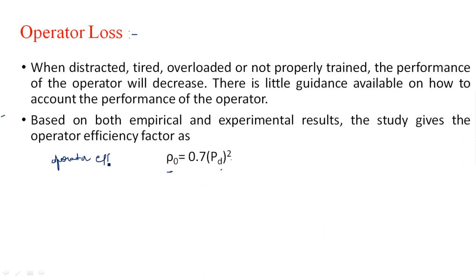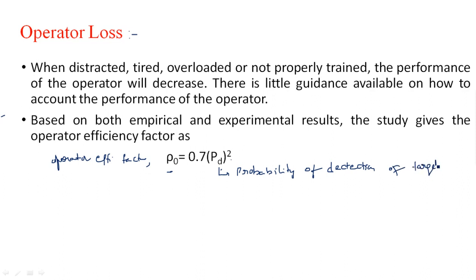The operator efficiency factor ρ₀ is given by: ρ₀ = 0.7 × Pd², where Pd is the probability of detection of the target. This formula quantifies the amount of loss present due to operator inefficiency. These are the system losses present in the radar system receivers.